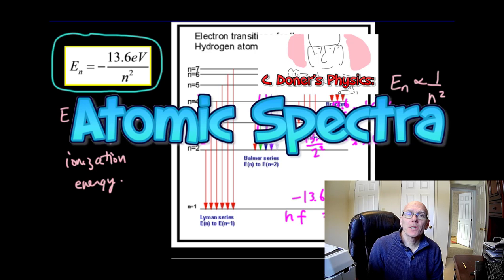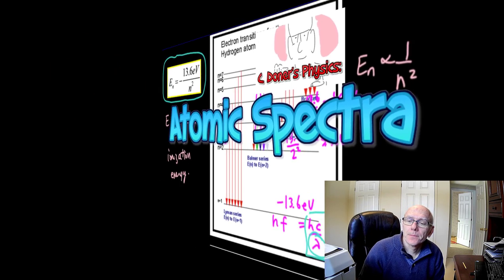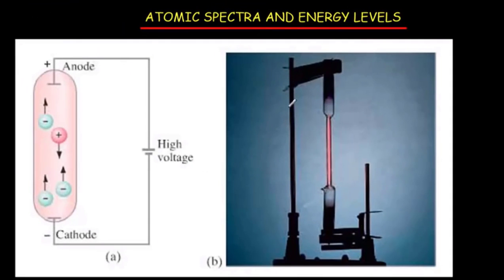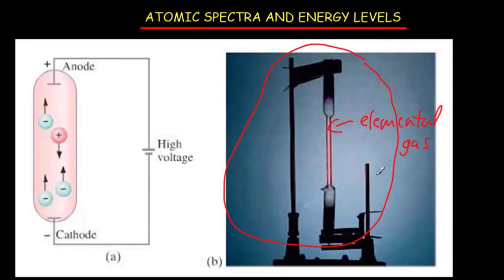Let's take a look at atomic spectra. You've probably seen these gas discharge tubes. Inside them there's an elemental gas such as hydrogen or helium, and it'll be at low pressure. Then we'll attach a high voltage across the ends of the gas.